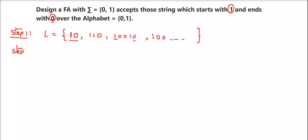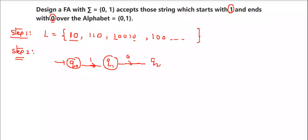What is step 2? In step 2, you have to write the basic diagram for the minimum string. Let us draw q0. On q0, applying input 1, we go to q1. Then applying 0 on q1, we go to state q2. Now, which will be the final state? But this is not the exact diagram — this only accepts '10'. You have to accept all the strings with this diagram.